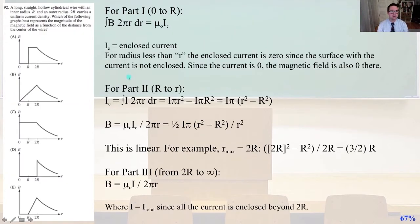92. A long, straight, hollow cylindrical wire with an inner radius, R, and an outer radius, 2R, carries a uniform current density. Which of the following graphs best represents the magnitude of the magnetic field as a function of the distance from the center of the wire?